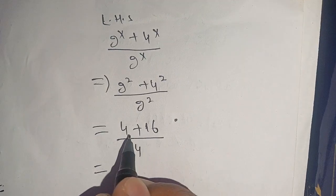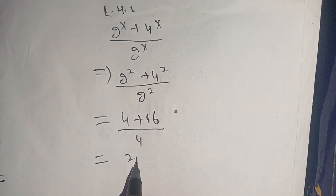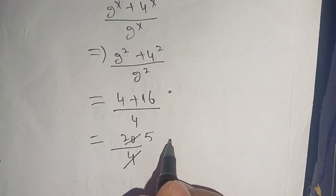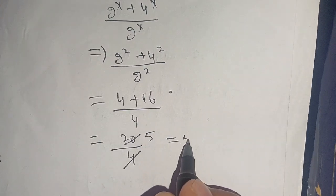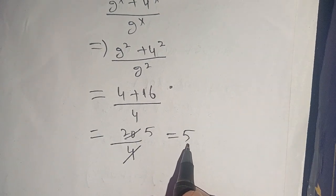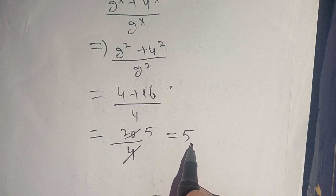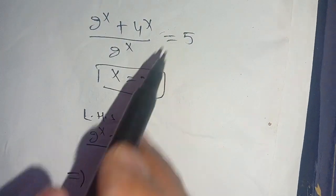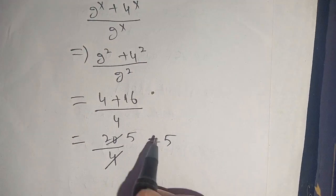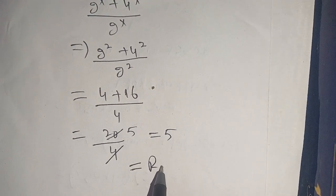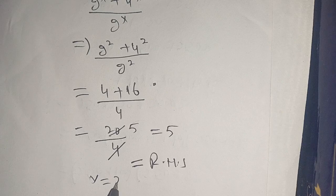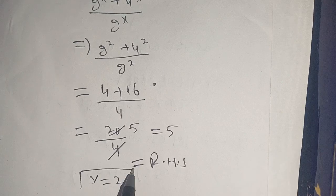Now 16 plus 4 becomes 20, divided by 4. Since 4 times 5 equals 20, this equals 5. Thus our left hand side equals 5 and our right hand side is also 5, which means left hand side equals right hand side. Therefore x equal to 2 satisfies our equation.